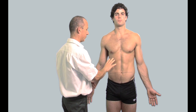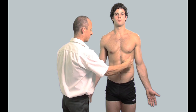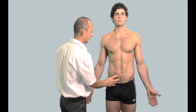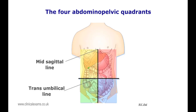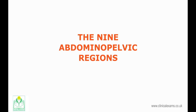The four quadrants are named accordingly: right upper quadrant, left upper quadrant, right lower quadrant, and left lower quadrant. This system can be used in mapping out large abdominal structures or when defining broader patterns of pain.